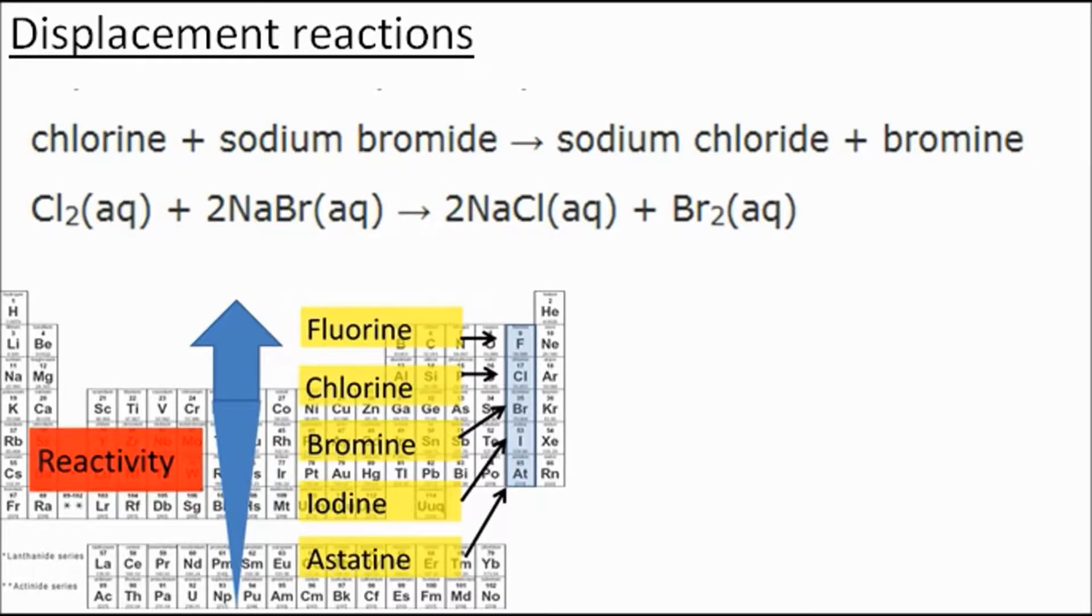Lastly, I want to talk about the group 7 displacement reactions. A displacement reaction occurs when one atom or molecule steals from another. Here we've got chlorine plus sodium bromide. Chlorine is a group 7, bromine is a group 7, and bromine's got hold of this sodium at the moment. Chlorine is more reactive than bromine, meaning it's stronger and has the ability to steal from it. Chlorine steals the sodium, and we end up with sodium chloride, and poor old bromine gets left on its own. That's a displacement reaction. A higher up group 7 halogen will steal from a lower down group 7 halogen.